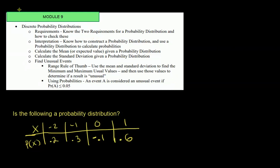In this video we'll talk about module 8 and some problems you should be prepared to answer on the exam. Module 8 is all about discrete probability distributions. The first thing you want to know is what is a discrete probability distribution, or what are the requirements for a table to qualify as one.